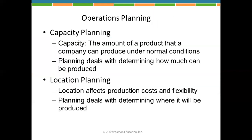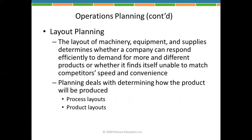Let's talk about operations planning. In operations planning, we have two types: capacity planning and location planning. Capacity planning is how many things we produce under normal situations. Location planning involves deciding where we will produce based on cost and flexibility. Layout planning focuses on how we respond to customer demand using our machinery, equipment, and supplies. There are two types of layouts: process layout and product layout.